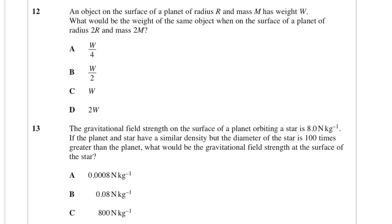An object on the surface of a planet radius r and mass m has weight W. What would the weight of the same object be when on the surface of a planet of radius 2r and mass 2m? We need to know what happened to the field strength. The top line has been multiplied by 2, the bottom line has been multiplied by 4, so essentially you've got g over 2. So the weight force is going to halve, so that's answer B.